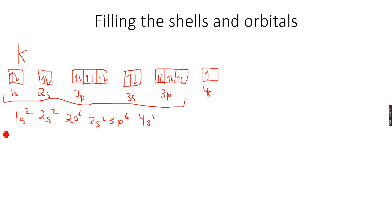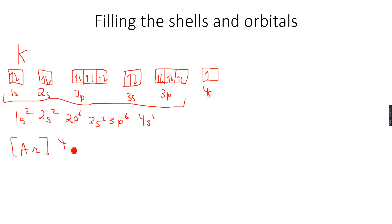Everything up to 3p⁶ is the electronic configuration of argon, so we can also write it as [Ar], and then write 4s¹, because after argon the 4s subshell is being filled.